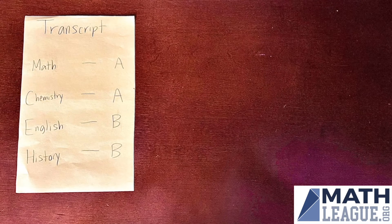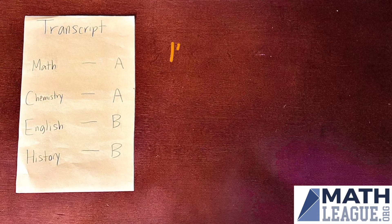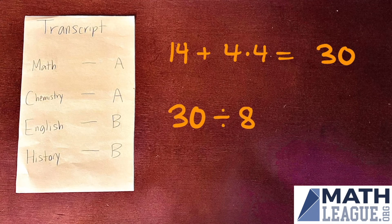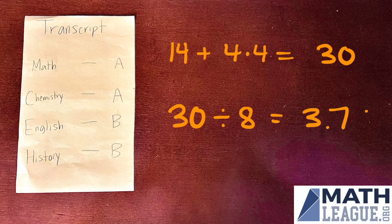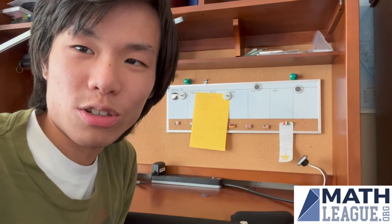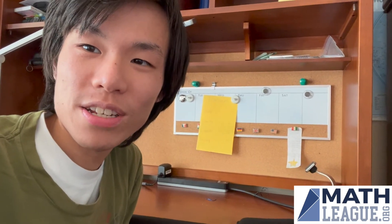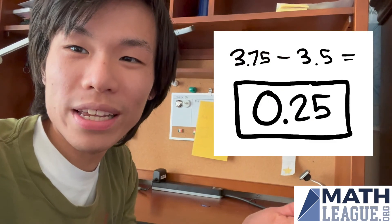So in Ethan's case, his maximum increase happens when he gets all As in all four classes of his next semester. Then the sum of his values for his eight grades will be 14 plus 4 times 4, which would equal 30. And so the GPA of Ethan's eight classes will be 30 divided by 8, or 3.75. This means that the greatest possible increase of Ethan's GPA from this semester to next semester will be 3.75 minus 3.5, or 0.25.